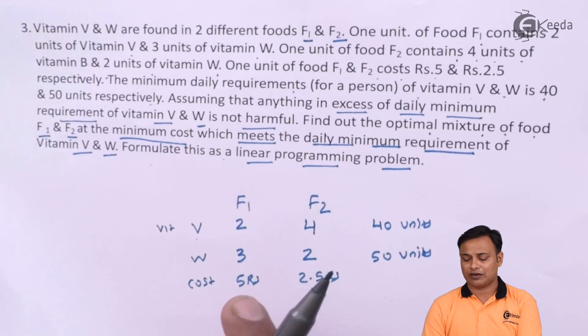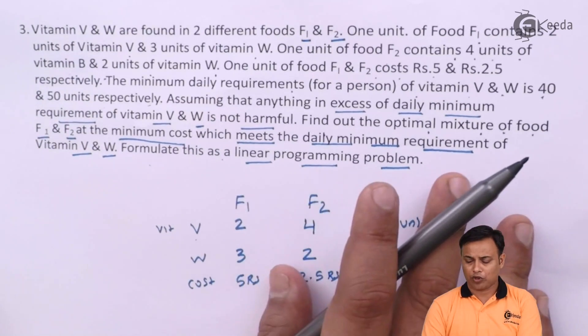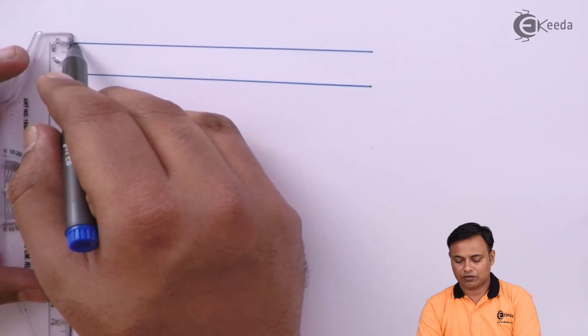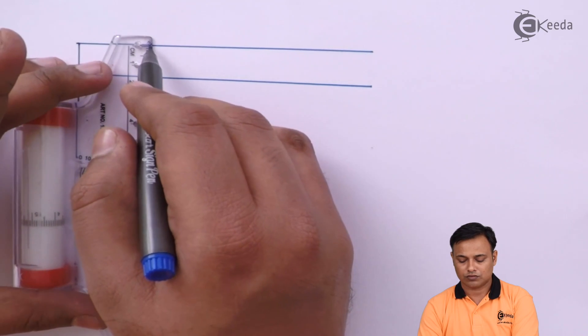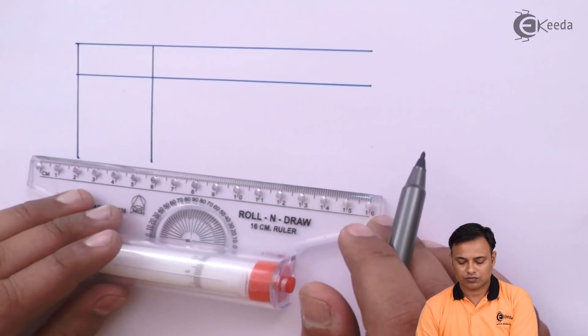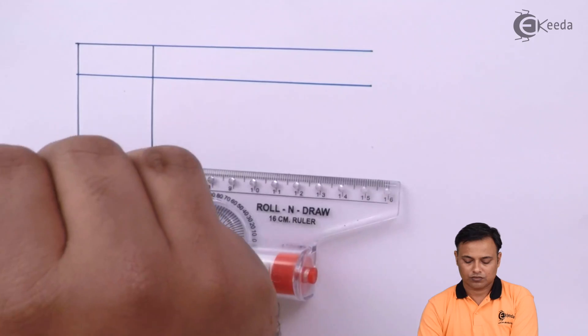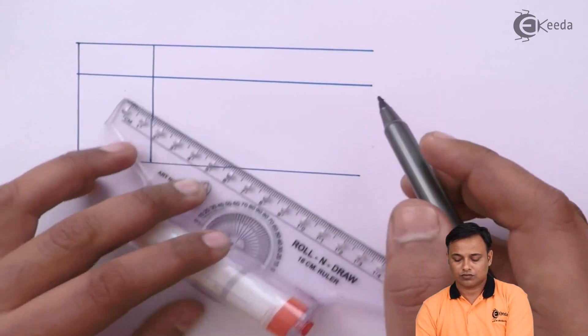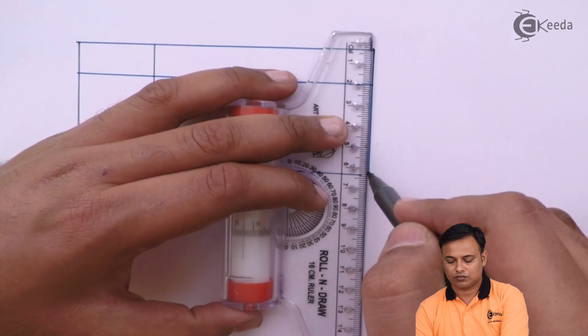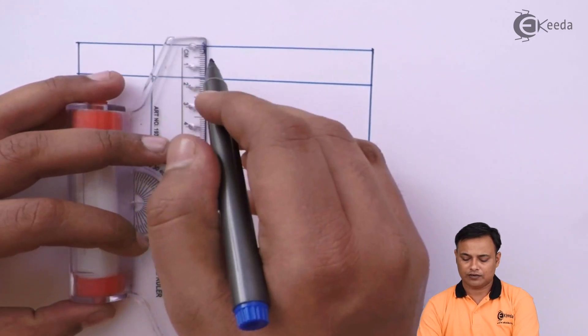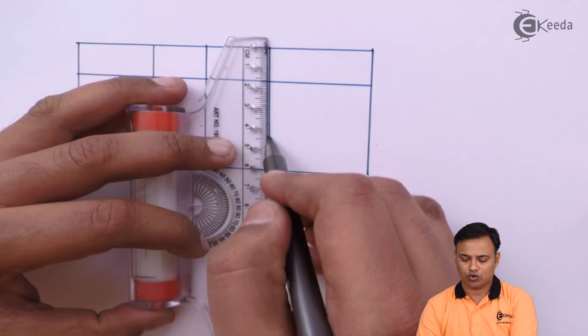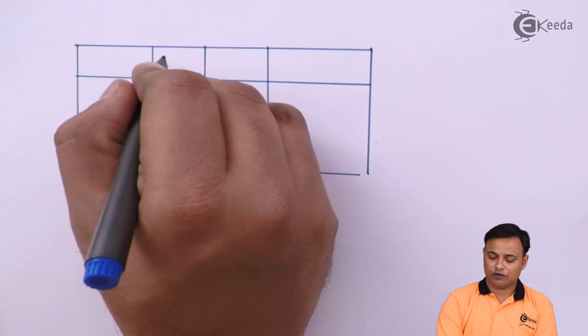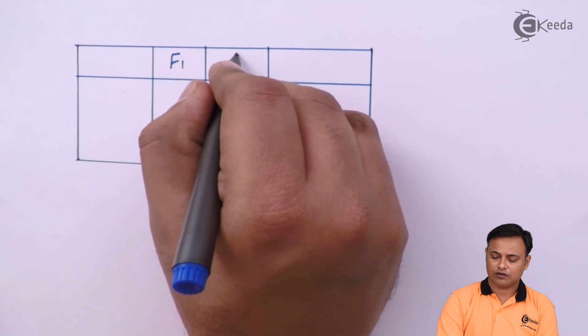First, we will try to convert the para format problem into a tabular format. Here will be our table. Our table will have two columns. One for food 1, other for food 2. So, here we have food 1, F1, food 2, F2.